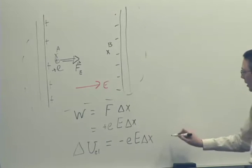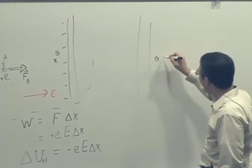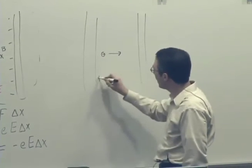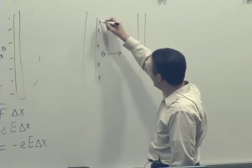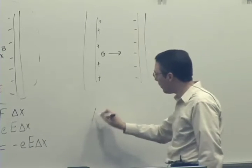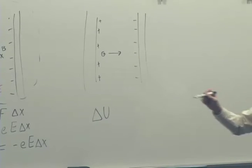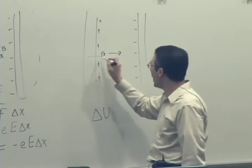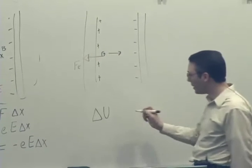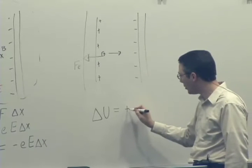But for the case of an electron, if you had an electron moving through the same region over the same distance, then the potential energy would actually go up. It would be kind of like throwing a ball up in the air because the force would be in the opposite direction of the displacement, so it would be tending to slow it down. Kinetic energy would be going down, but potential energy would be going up.